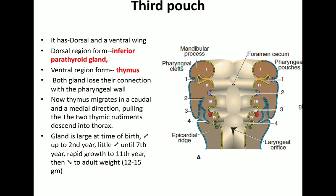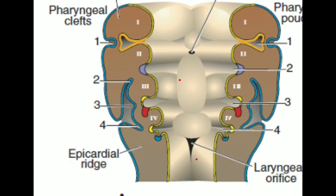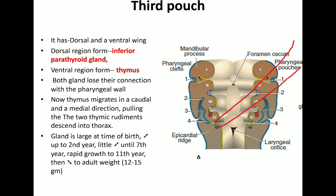Coming to the third pouch — the third pouch and fourth pouch both have two regions: a dorsal region and a ventral region, called the dorsal wing and ventral wing respectively. In the diagram, the yellow part is the dorsal wing and the reddish part is the ventral wing of the third pouch. Similarly, for the fourth pouch, the dorsal wing is shown in yellow and the bluish part is the ventral wing.